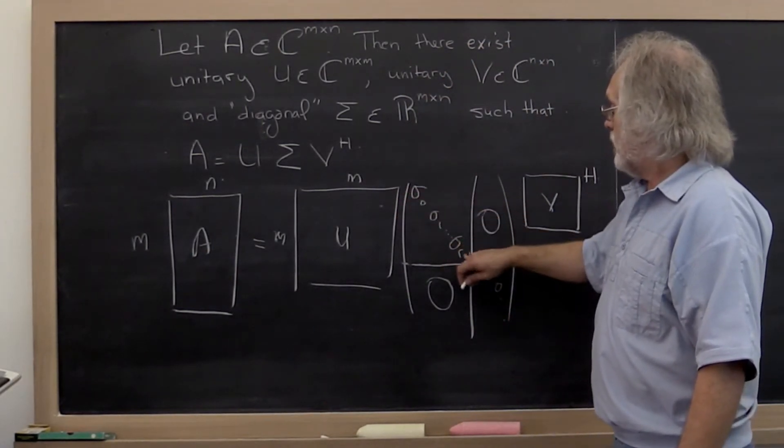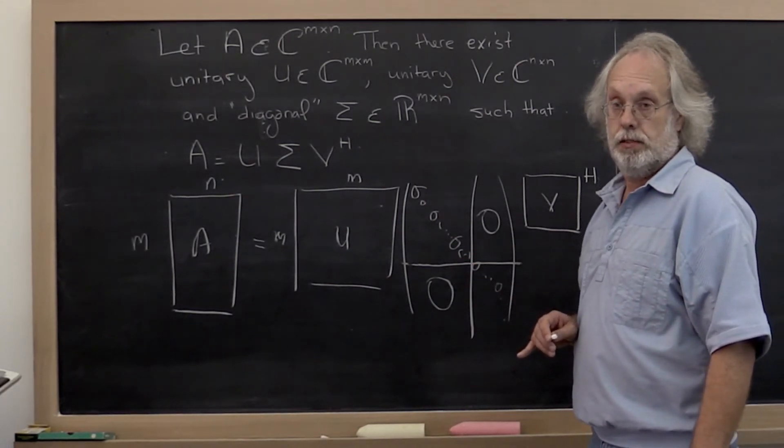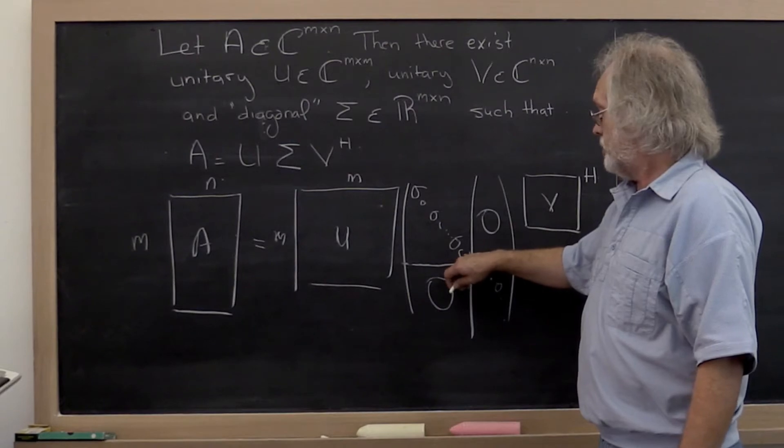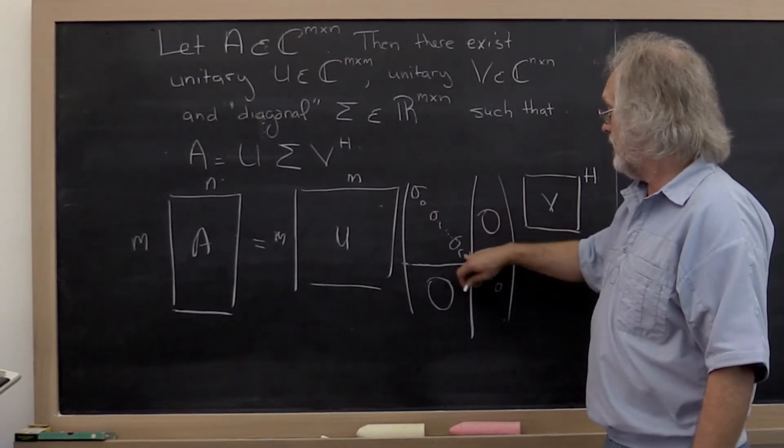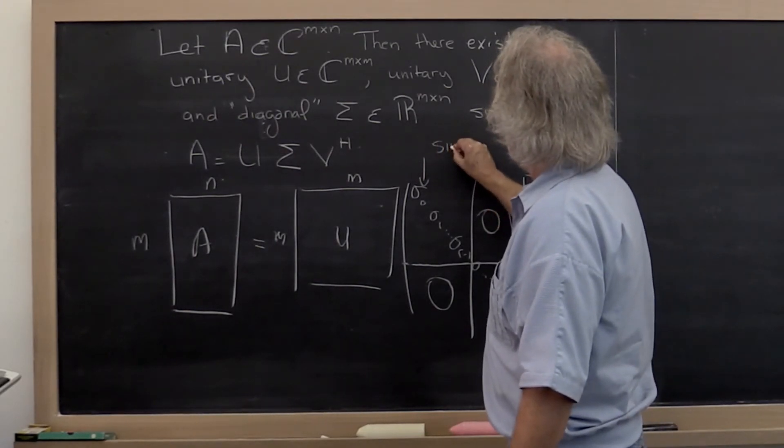These values right here are all positive. So if the matrix has rank r, then all of these values are positive. And these values are known as the singular values.